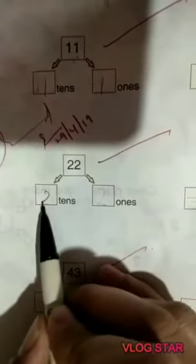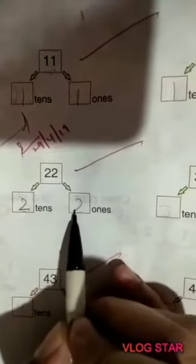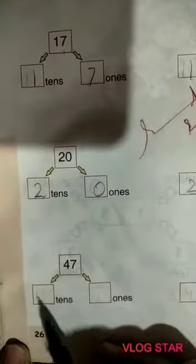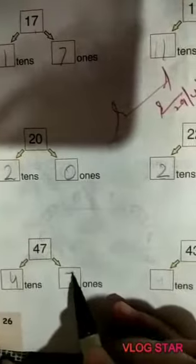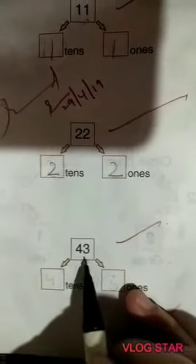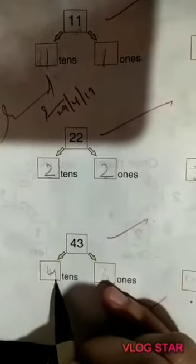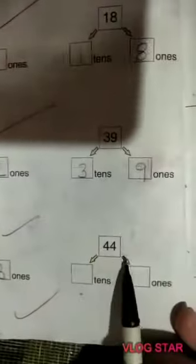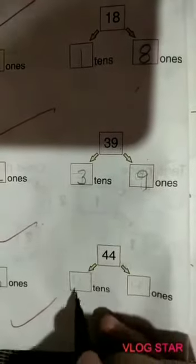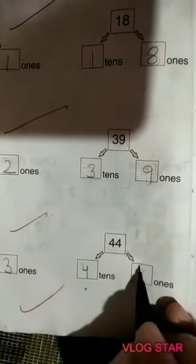It's a number 20. Two is two tens and zero is zero ones. It's a number 22. Two is two tens and two is two ones. It's a number 39. Three is three tens and nine is nine ones. It's a number 47. Four is four tens and seven is seven ones. It's a number 43. Four is four tens and three is three ones. It's a number 44. Four is four tens and four is four ones.